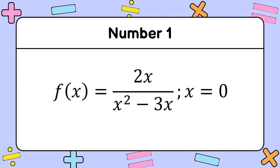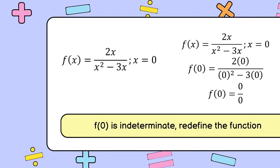The first function we have is f of x equal to 2x over x squared minus 3x, given x is equal to 0.